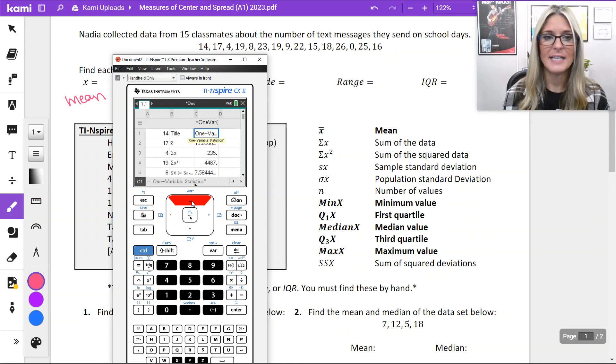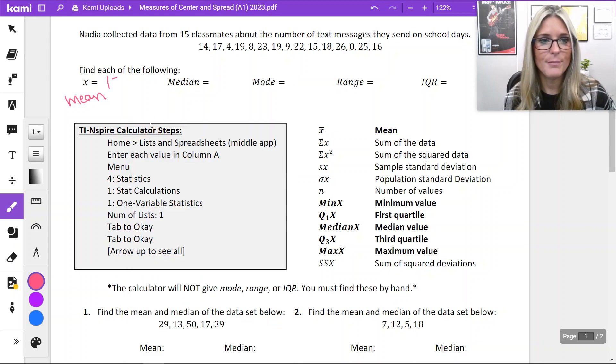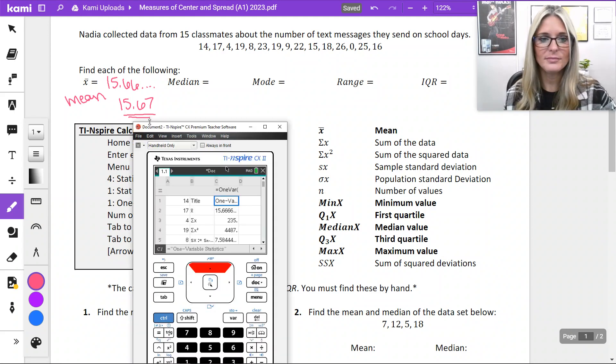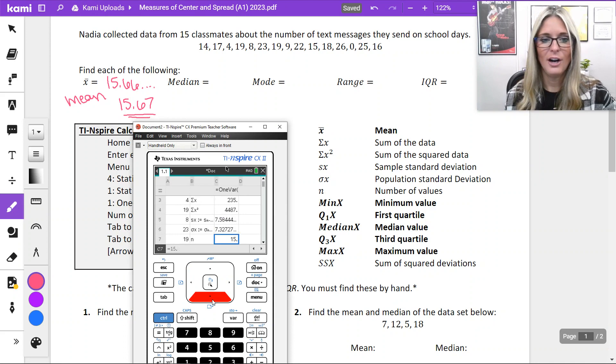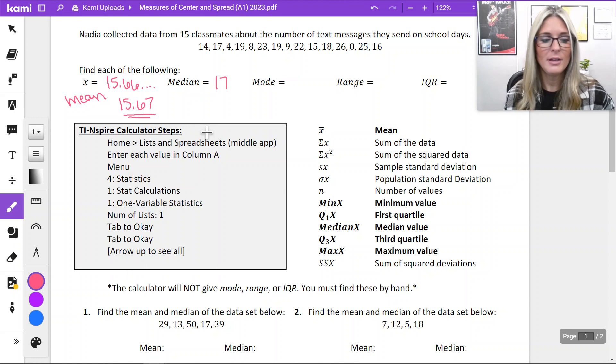So like I said, our mean here is 15.666, it was repeating. I'm just going to round it to the hundredths place for this example and say 15.67. Our median value is down here, it's 17. Taking it straight from the calculator.